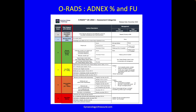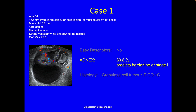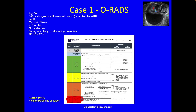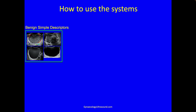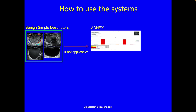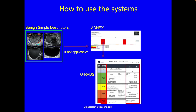ORADS is basically a reflection of that. In the UK, we use ADNEX to describe the category for the ADNEX score in the same traffic light system. This gives you management: in the case we just saw with an ADNEX score of 80.8%, that's a high-risk patient and she needs to be managed by gyne-oncology. If you see an abnormal ovary, go for benign simple descriptors; if it doesn't fit one of the four, work out the ADNEX score and use ADNEX within the ORADS chart to give you the management.